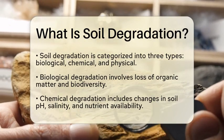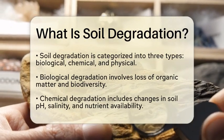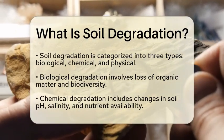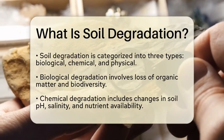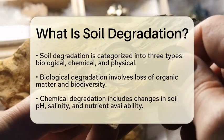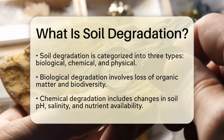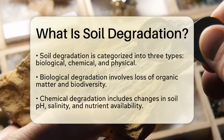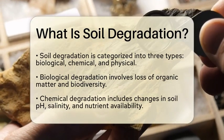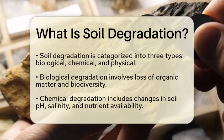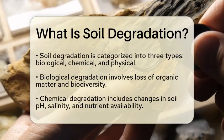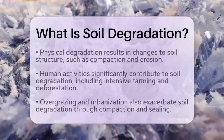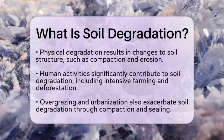Physical degradation involves changes in soil structure, such as compaction or erosion. Erosion can be caused by wind or water, leading to the loss of topsoil, which is rich in nutrients. This type of degradation can be particularly damaging to agricultural lands.